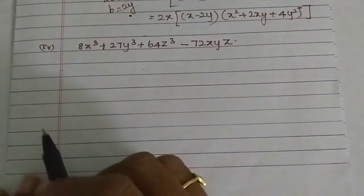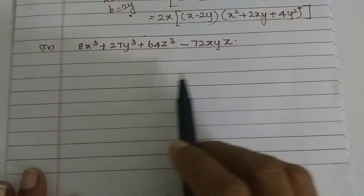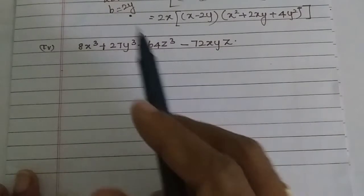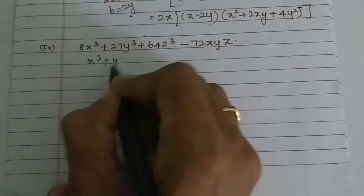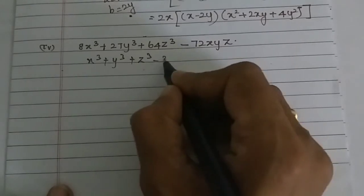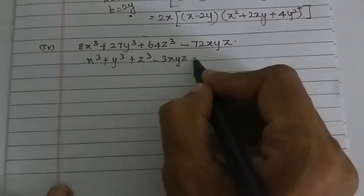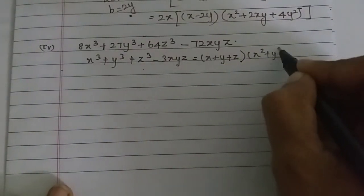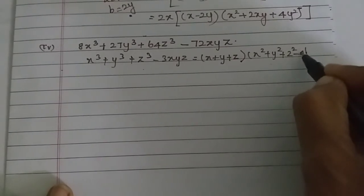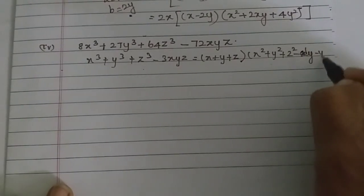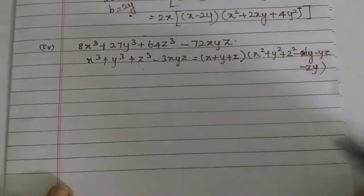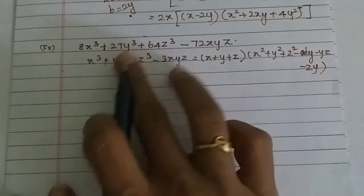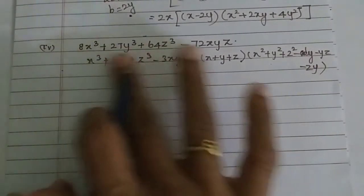The fourth subdivision: 8x³ + 27y³ + 64z³ - 72xyz. This matches the formula x³ + y³ + z³ - 3xyz. We need to check if 8x³, 27y³, and 64z³ are perfect cubes and verify the 3xyz coefficient.